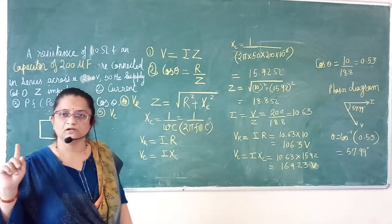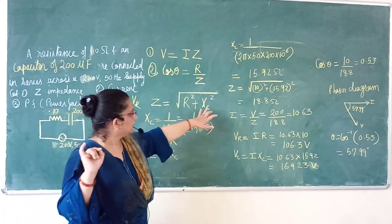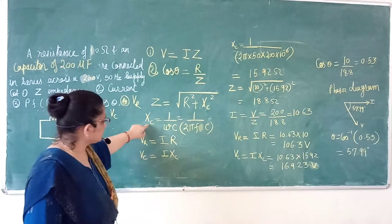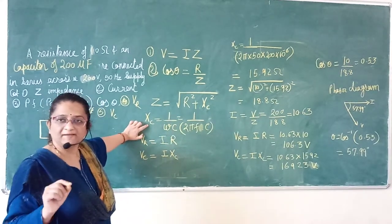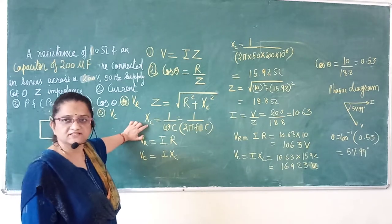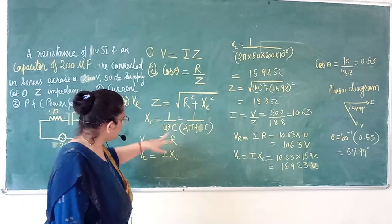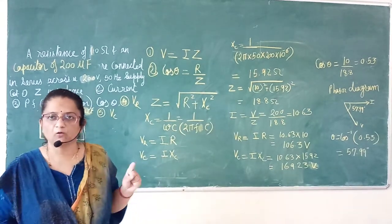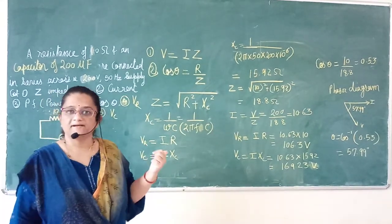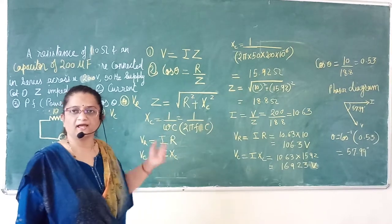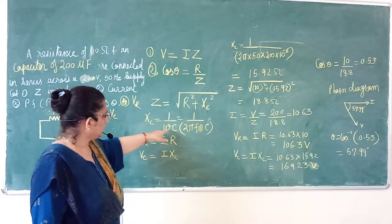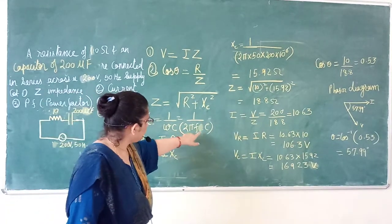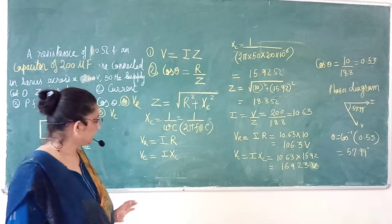If you want to draw the inductance, what is this? XL. Xc means capacitive reactance. What is this formula? 1 upon omega C. XL, what is this formula? Omega L. Capacitive reactance formula is 1 upon omega C, 1 upon 2 pi fC.